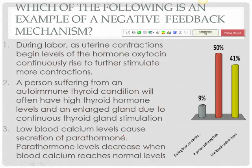The correct answer is number three. Option one describes labor uterine contractions where oxytocin continuously rises to stimulate more contractions — the word 'more' is there, indicating positive feedback. Option two describes continuous thyroid gland stimulation where the gland is never shut off — also a malfunction. Option three says low blood calcium causes parathormone to be secreted; when blood calcium reaches normal levels, parathormone decreases. So in the beginning there's a positive effect, the result is achieved, and then it's turned off — that is a negative feedback mechanism.